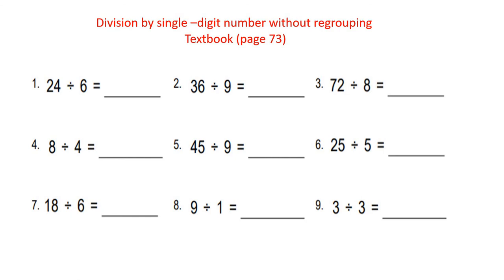You have to remember the times table for each number. If you want to divide 24 by 6, you have to remember the times table for 6 — what number multiplied by 6 equals 24? It's 4. 4 times 6. Then 36 divided by 9 is 4, because 4 times 9 equals 36. And 72 divided by 8 is 9, so 9 times 8 equals 72. And 8 divided by 4 is 2, because 2 times 4 equals 8.